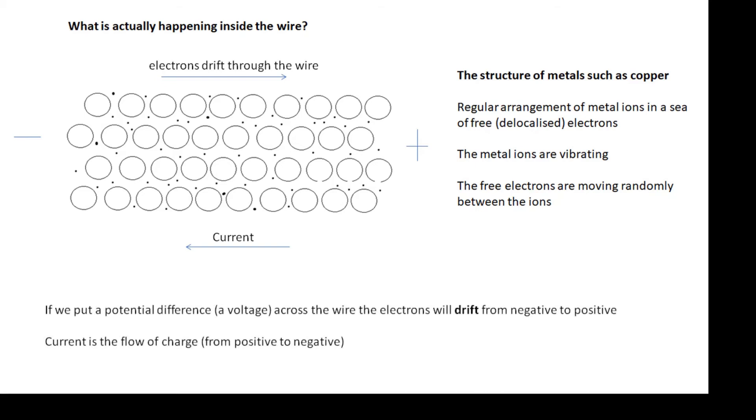If we put a potential difference, a voltage across the wire, we say that the electrons drift. They don't zip across very quickly because there's lots of metal ions in the way. They bang into the metal ions. And current is the rate of flow of charge from positive to negative.